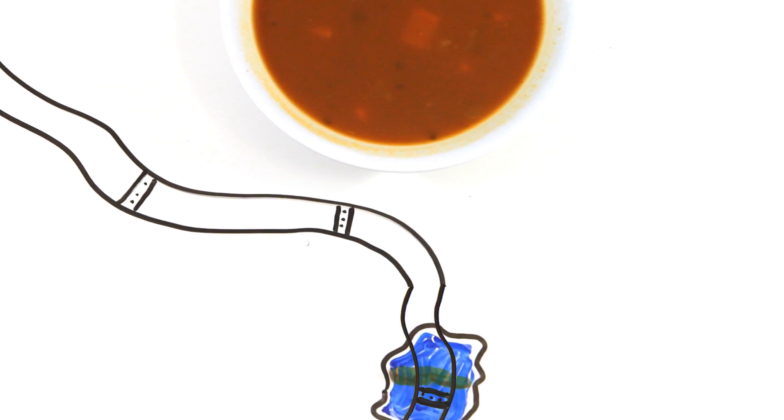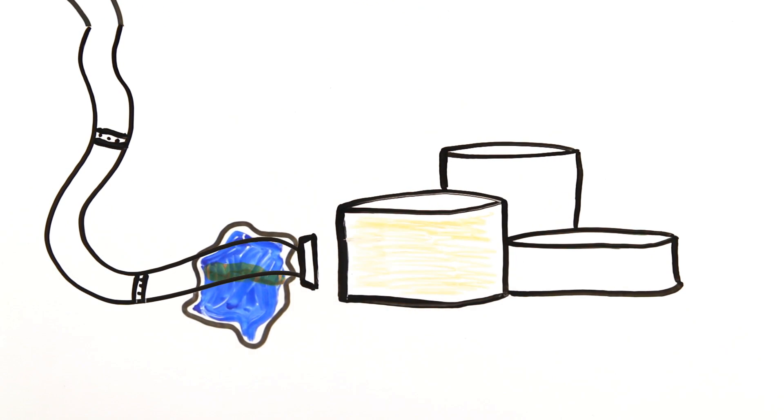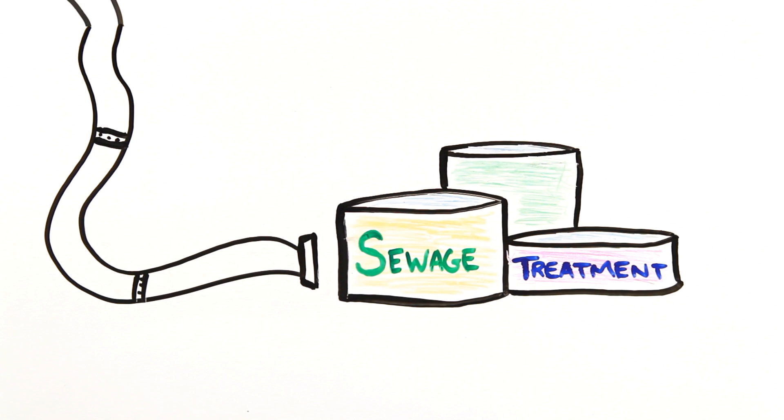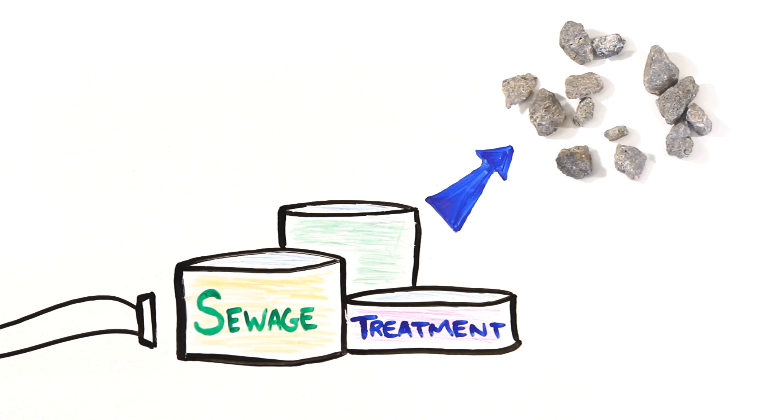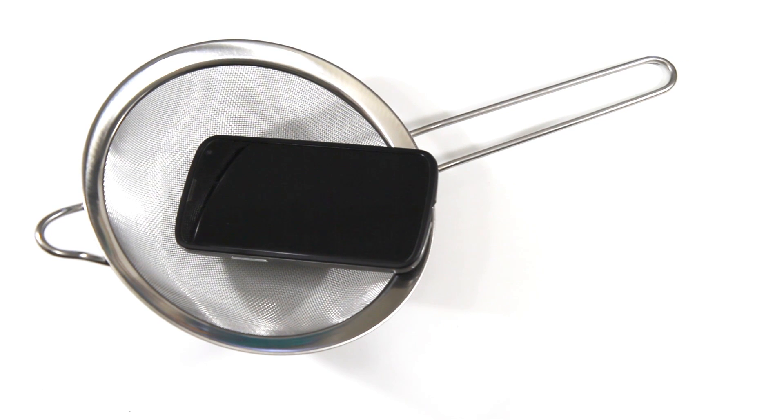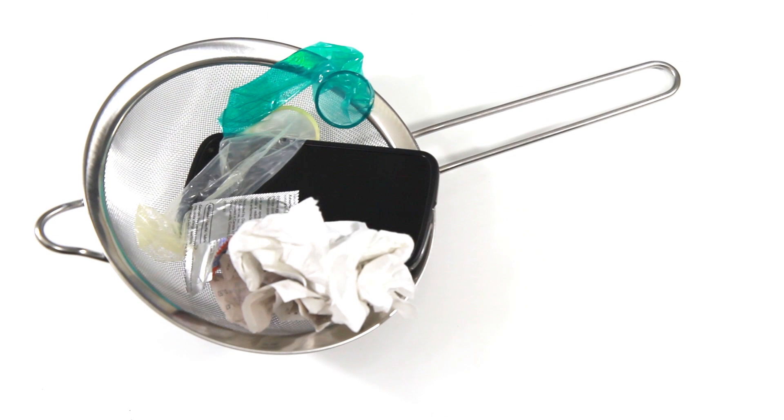After passing through potentially miles of pipes, the soup reaches the sewage treatment plant and is initially screened and skimmed to separate out things like sand, grit and pebbles. More importantly, this is where that cell phone you accidentally dropped down the toilet gets caught, along with condoms, garbage and other stuff you thought would be a good idea to toss down the drain.